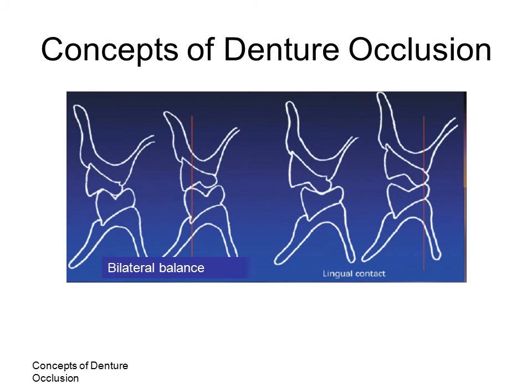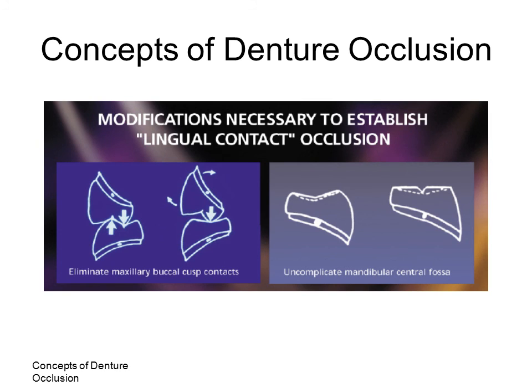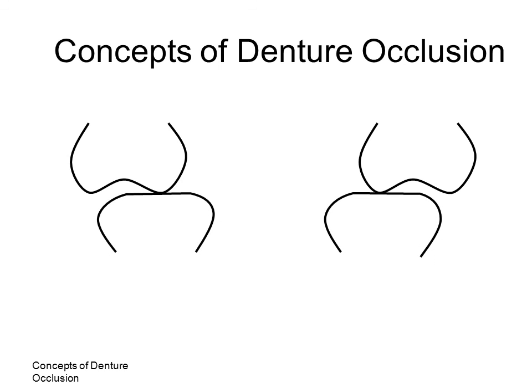Lingualized articulation may distribute forces more favorably for denture stability. Unless the tooth is specifically designed for lingualized occlusion, modifications may be required. The maxillary tooth buccal cusp may be inclined toward the buccal, and the mandibular fossa may be modified. A lingualized occlusion may use the lingual cusp of the maxillary tooth to provide centric contacts only, similar to the non-anatomic scheme with no attempt to provide balance. No overlap of the maxillary anterior teeth is permitted unless sufficient horizontal overjet is provided to prevent interferences. The aesthetics will be favorable due to the anatomic maxillary tooth while functionally similar to non-anatomic articulation.